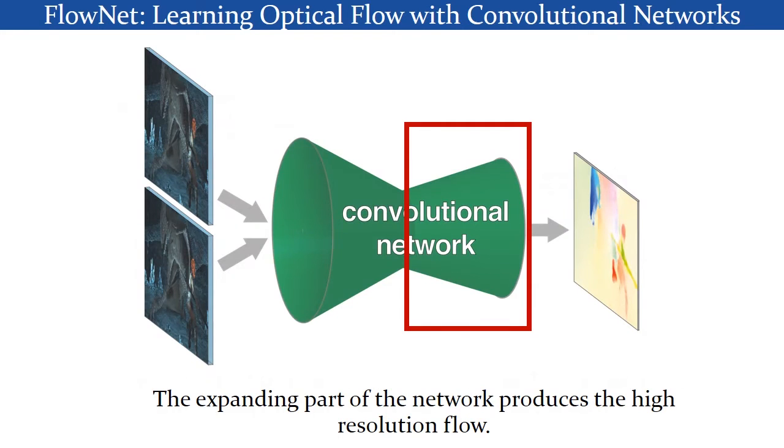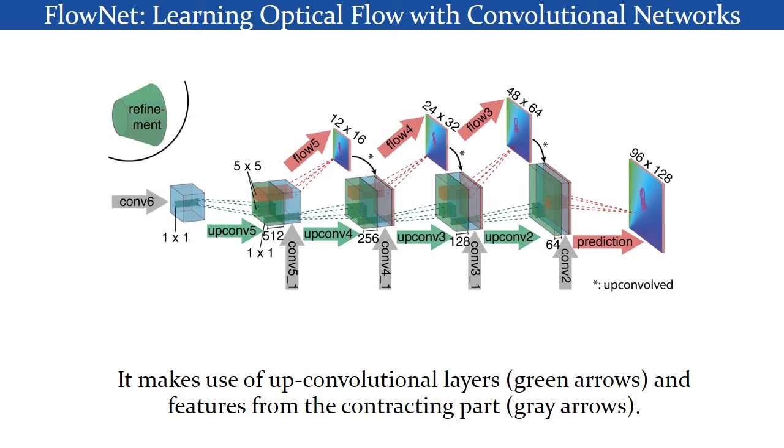The expanding part of the network produces the high-resolution flow. It makes use of up-convolutional layers and features from the contracting part.